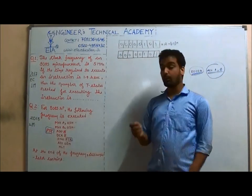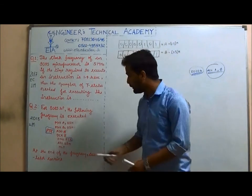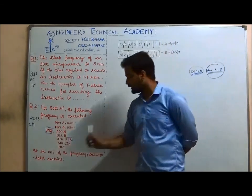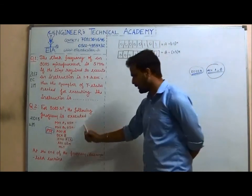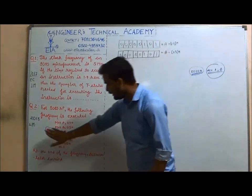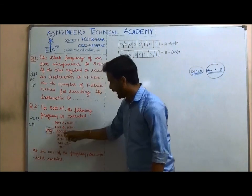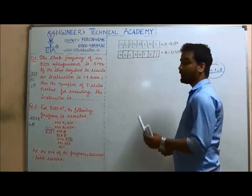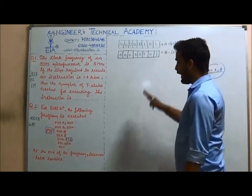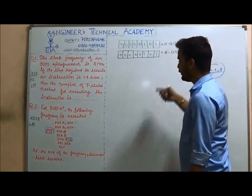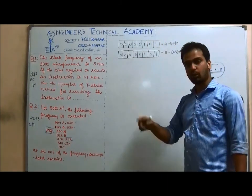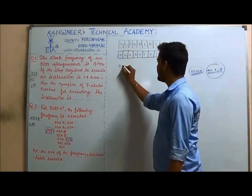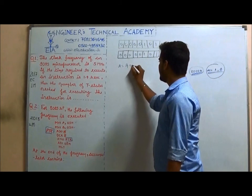The question arises: what do we specify as PTR? ADD B means add the contents of B into the accumulator and store the result in the accumulator. So the third step is A = A + B.